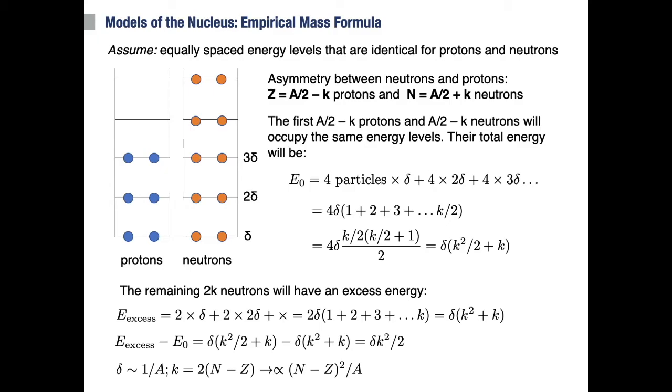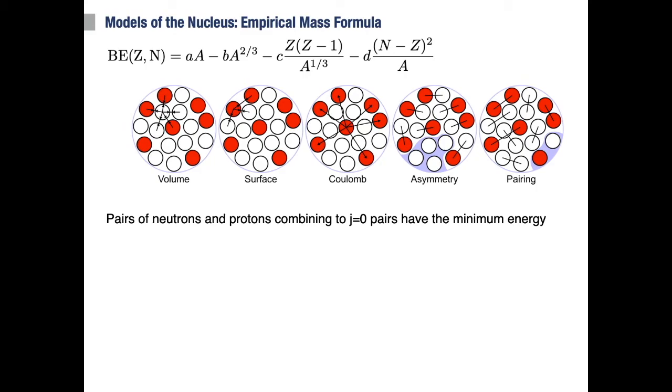Again, I want to stress here that this is not a rigorous derivation, but in any case it is useful to understand what is happening. To summarize, we subtract an asymmetry term to penalize for the extra energy expected in asymmetric nuclei due to the Pauli exclusion principle.